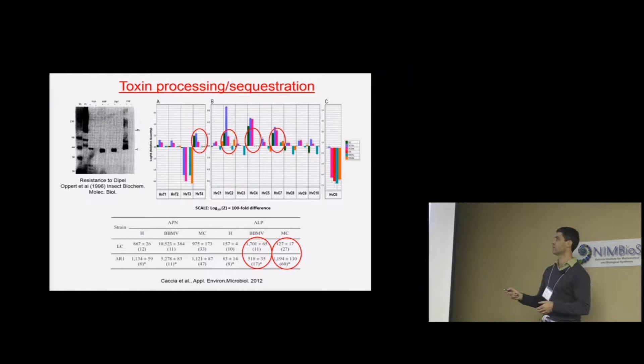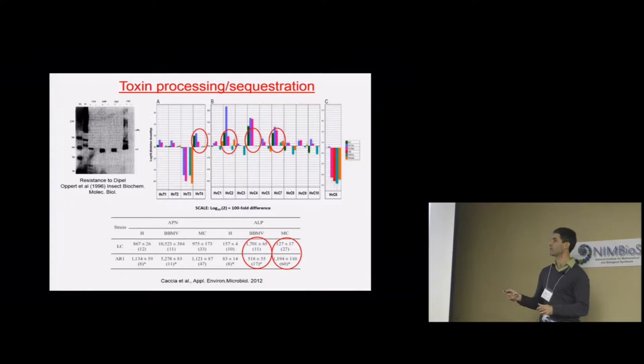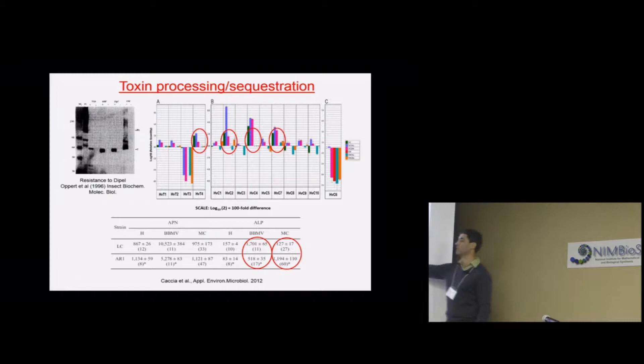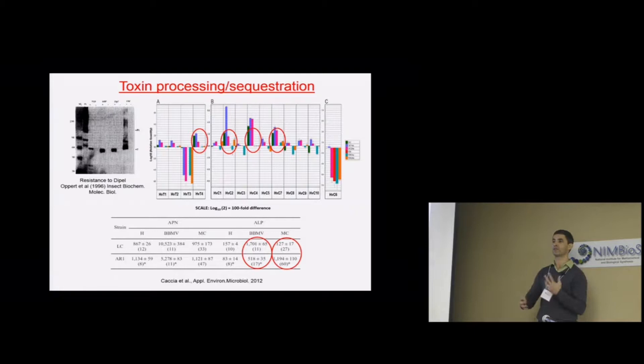We have also seen huge differences in the expression of trypsin and chymotrypsin — enzymes involved in activating the toxins — in susceptible versus resistant strains of Heliothis virescens, the tobacco budworm. The first three bars for each trypsin or chymotrypsin gene are expression levels in the resistant strain, compared to expression levels in the susceptible strain. You can see this huge difference, which results in changes in how fast the toxin is activated or even if it's degraded.